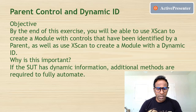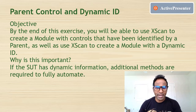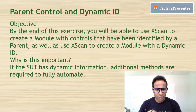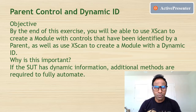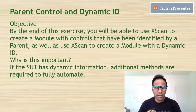Our second and third agenda items are parent control and dynamic ID. By the end of this exercise you will be able to use XScan to create a module with controls identified by a parent, and use XScan to create a module with a dynamic ID. This is important when your application under test has dynamic information requiring additional methods to fully automate. We use parent control when an object cannot be uniquely identified by its own property.